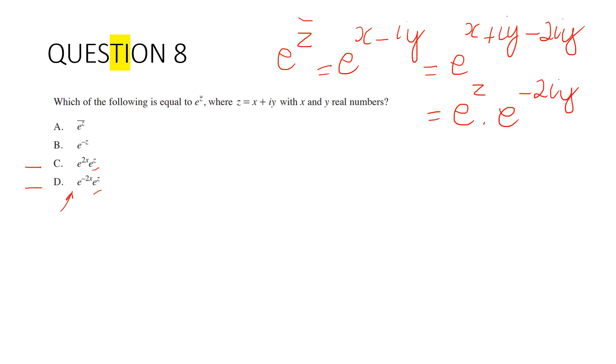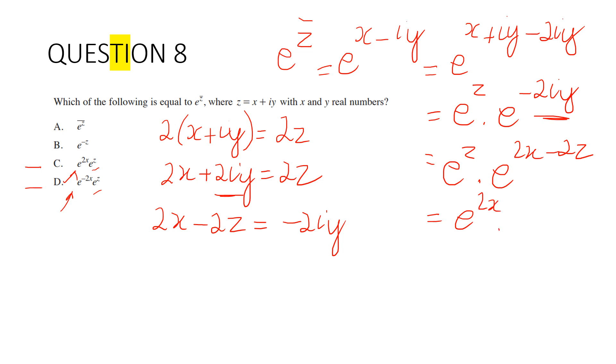Now, in both cases, we've got this first part in terms of x. So let's form that. I want 2x. So let's do 2(x plus iy), which equals 2z. So 2x plus 2iy equals 2z. I want negative, so 2x minus 2z equals negative 2iy. Equals e to the z times e to the (2x minus 2z), which equals e to the 2x, e to the negative z. Which is neither of those. It's not C and not D.